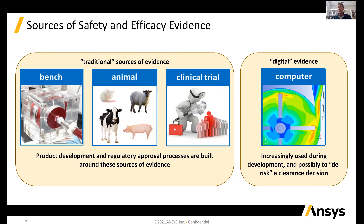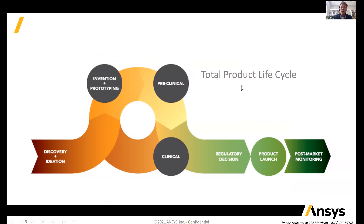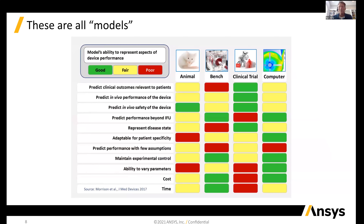One of the challenges we face is that the medical device industry is built on three traditional sources of evidence for establishing safety and efficacy: bench testing, animal testing, and clinical trials. Because the industry is so heavily reliant on these, regulatory agencies around the world have built their review processes around them as well. Computational modeling is the new kid on the block and really has to establish itself as a trusted source of evidence.